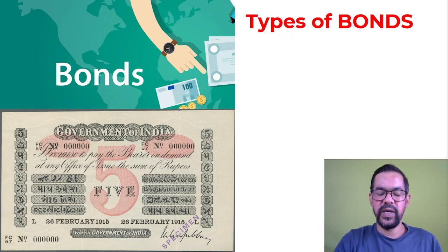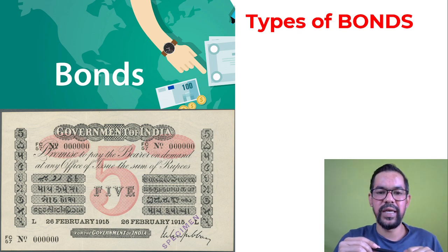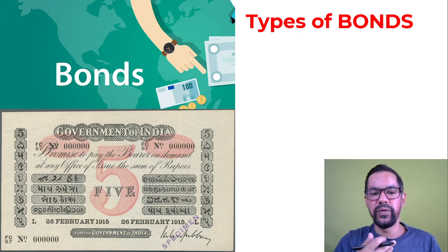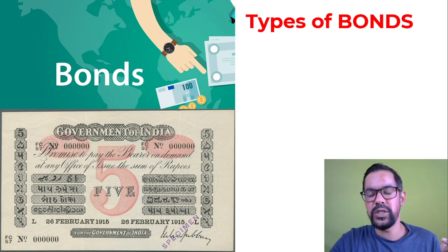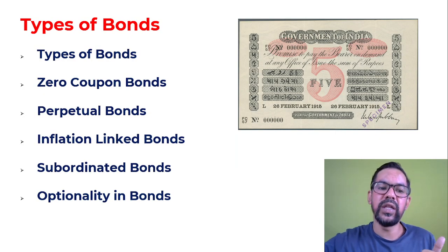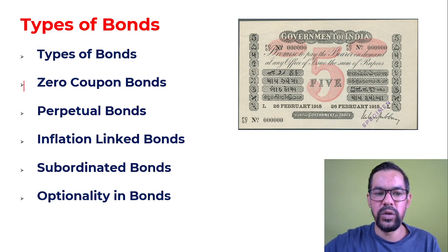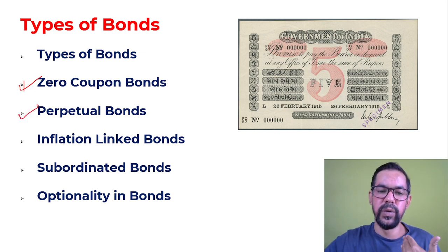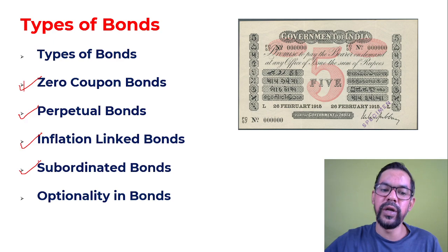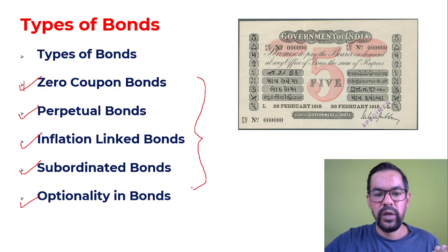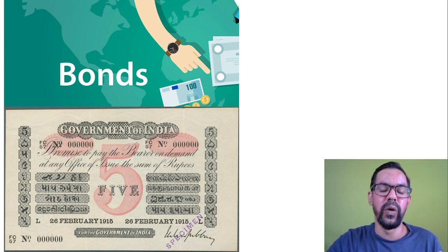Welcome back. In this video we are going to continue with bonds. In our previous video we generally talked about what bonds are and the key terms associated with them. Now we will talk about the different types of bonds available in the market for investment — zero coupon bonds, perpetual bonds, inflation-linked bonds, subordinated bonds, and optionability in bonds like callable and putable bonds.